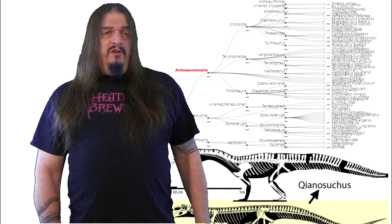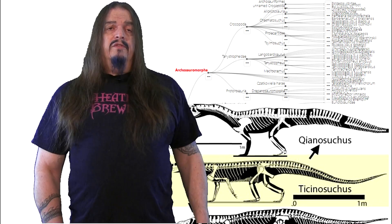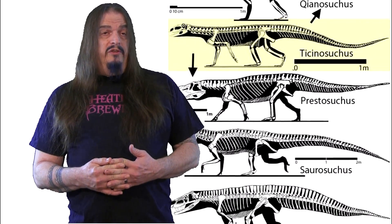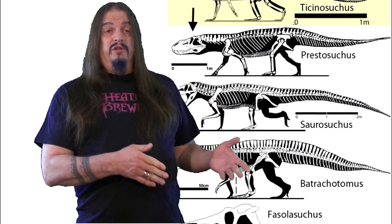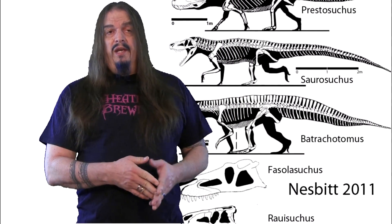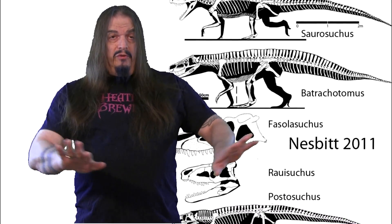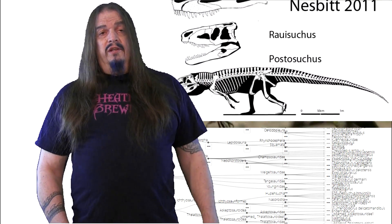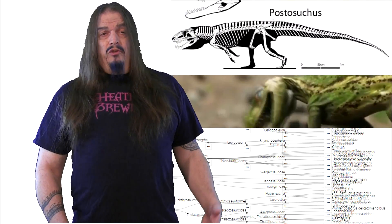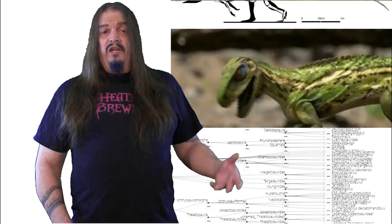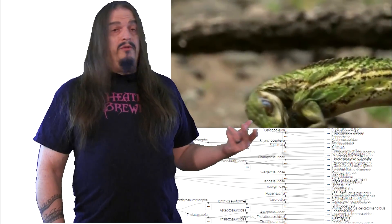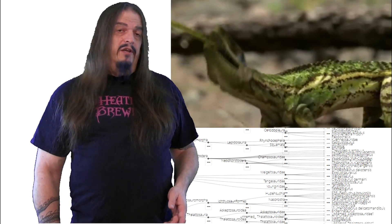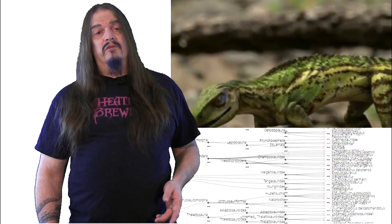Remember that one of the laws of evolution is: the further back in time you look, the more similar different lineages will be to each other, because they were once the same thing and have since grown apart. So at some point, some ancient archosaur like the early Triassic Euparkeria was the ancestor of both Crocodilomorphs and Crurotarsians, which include dinosaurs and pterosaurs.